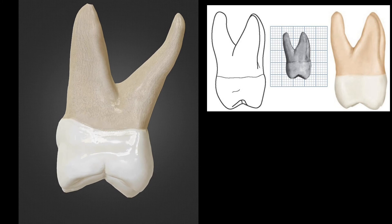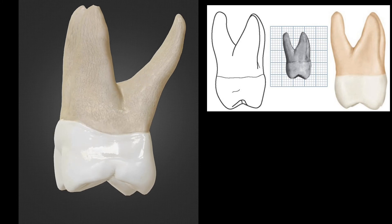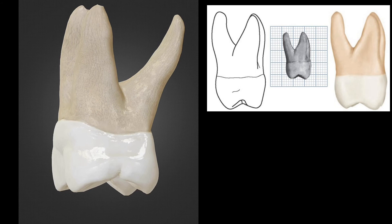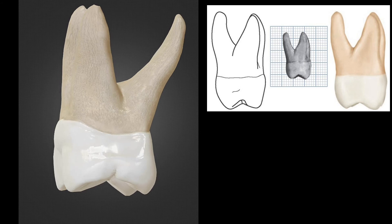The distal aspect is grossly similar to the mesial aspect — the crown is trapezoid in shape and the contours are similar. However, the crown tapers distally so most of the buccal surface is visible from this angle. The cervical line here is almost straight, and the distobuccal root is narrower.